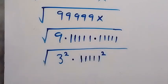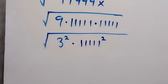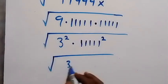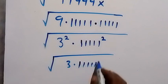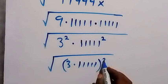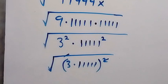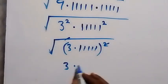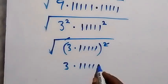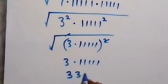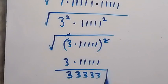We can bring it all together: we have the square root of 3 squared times 1 1 1 1 1 squared. Since the powers are the same, by the law of indices we can take them out together. The square root cancels with the square, and this gives us 3 times 1 1 1 1 1, which equals 3 3 3 3 3. So the simplified form of the given problem is 3 3 3 3 3.